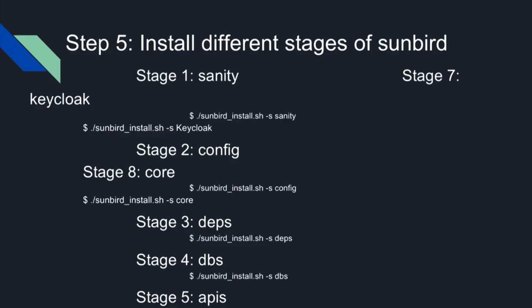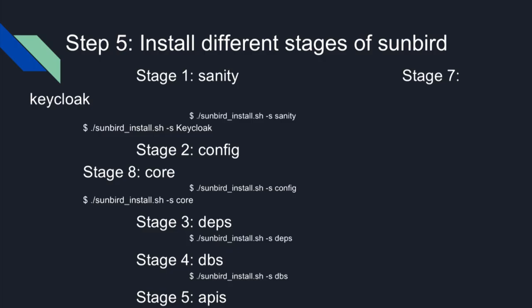This step includes eight different stages of installation. The first was the sanity check, which checks the prerequisites and whether the required software is properly installed, and also verifies that the RAM is compatible. The second was the config stage, which installs the config and host files. The third is deps, which installs all the dependencies. The DBS stage installs and configures the Cassandra database.